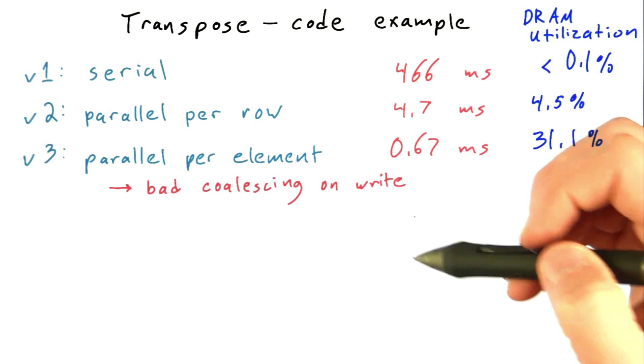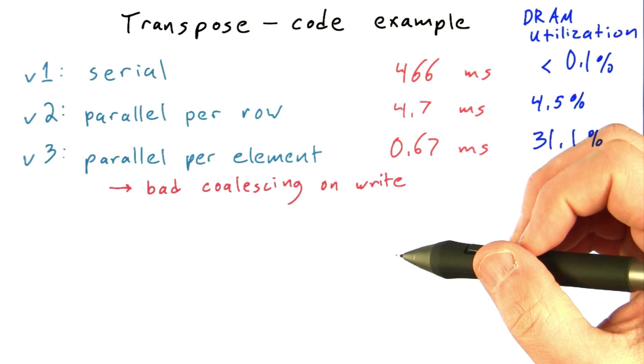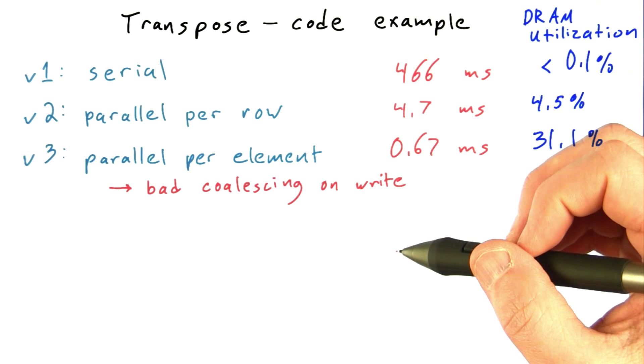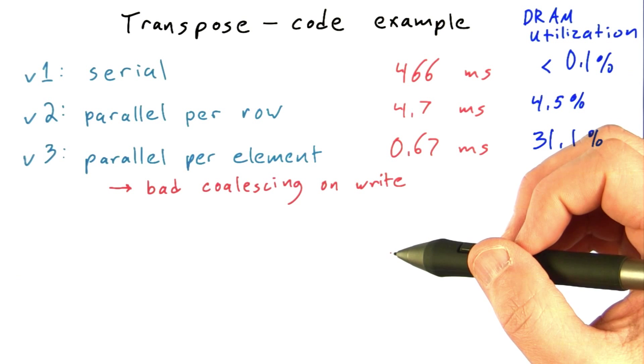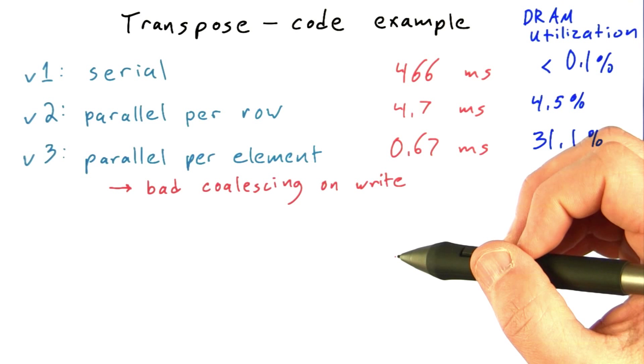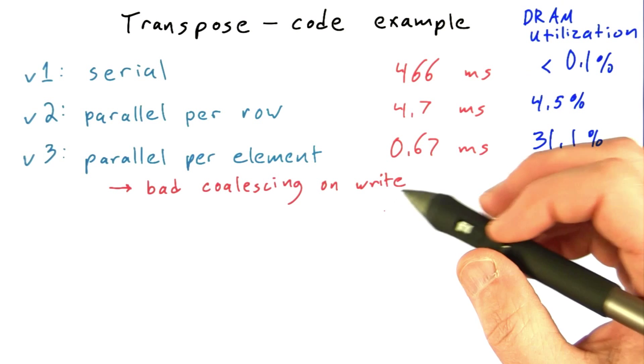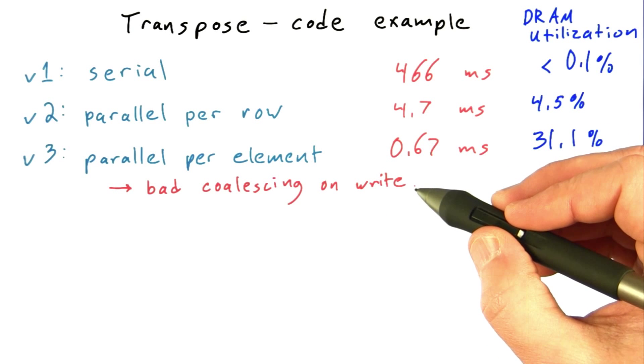We saw that it was really quite low, and we said, why would we be getting low bandwidth to global memory? Well, the first thing you always look at there is coalescing. And then we inspected the code and convinced ourselves that yes, there's bad coalescing happening when we write to the output matrix.